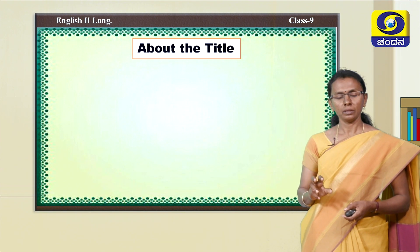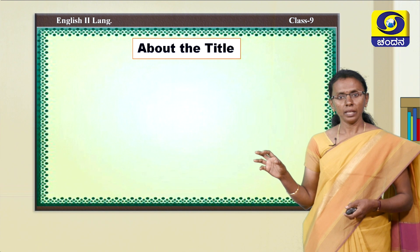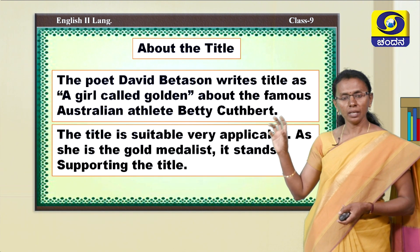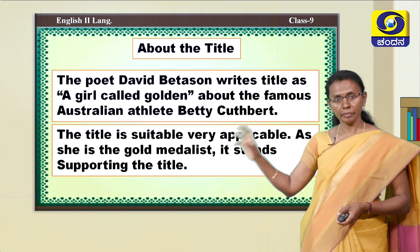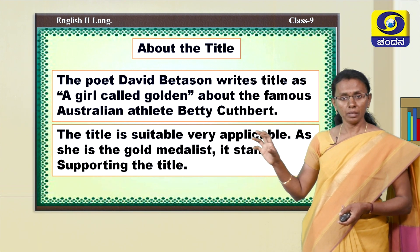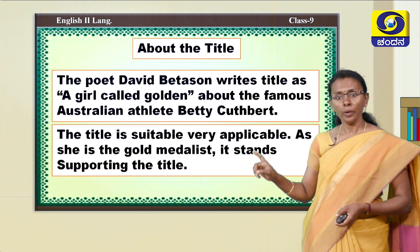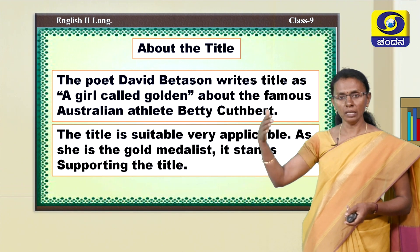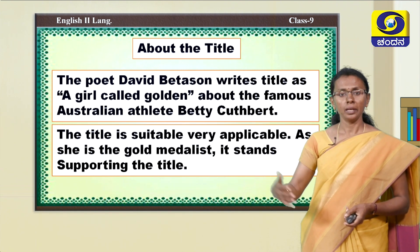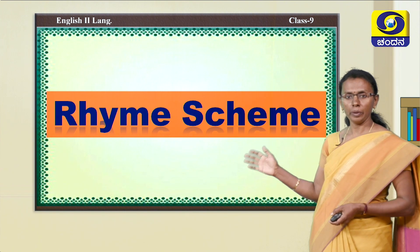Now, how do you feel about the title of this poem? The poet David Batson wrote the title as 'A Girl Called Golden.' Is that title suitable for the famous Australian athlete Betty Cuthbert? Yes, the title is suitable — very applicable — as she is the gold medalist, the title supports her. She is the one who resembles gold medals, so she is the golden girl.